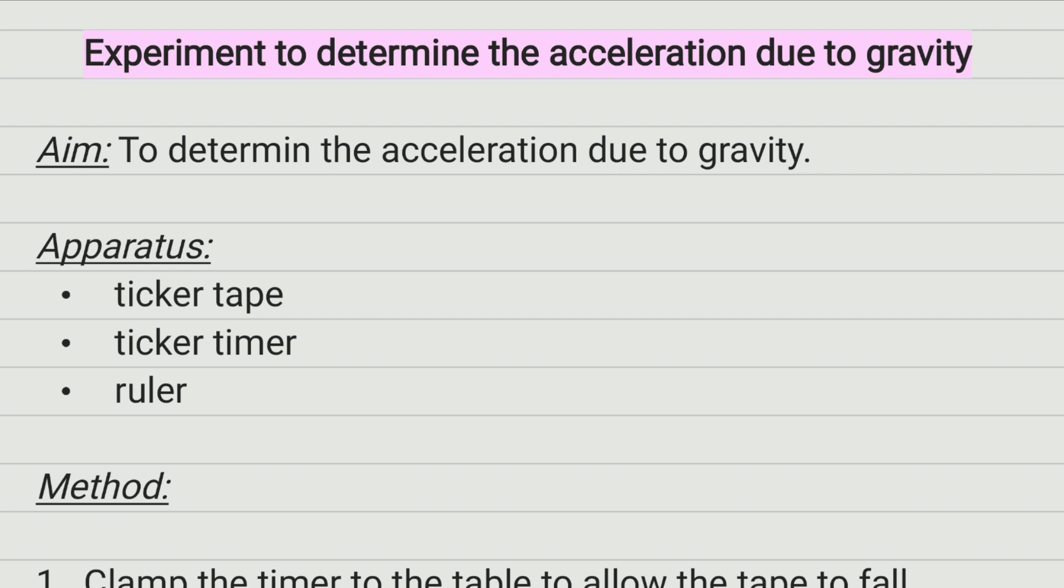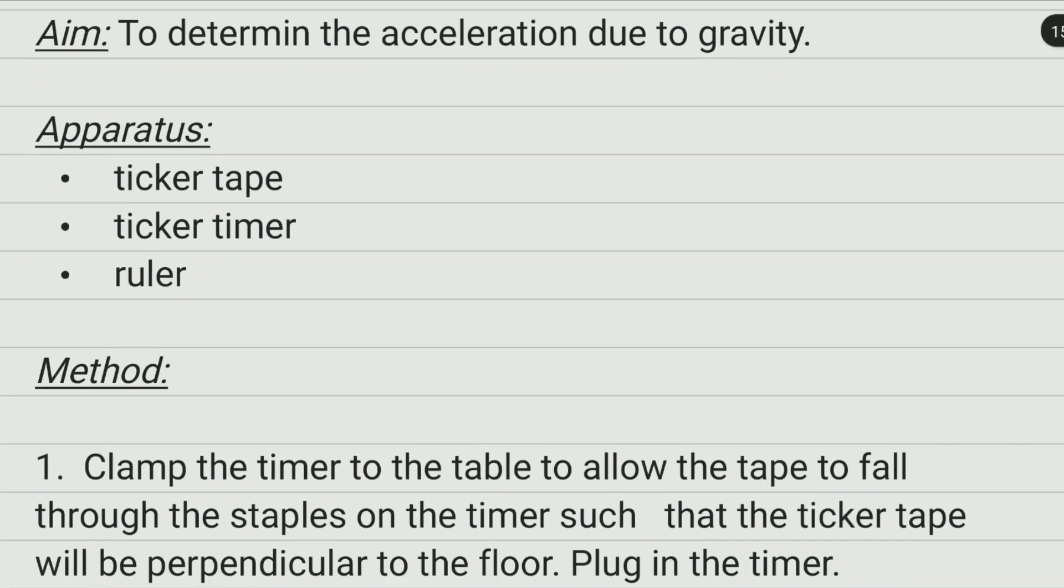Alright, so the aim of the experiment is obvious - to determine the acceleration due to gravity. The main apparatus are going to be the ticker tape, the ticker timer, and a ruler.